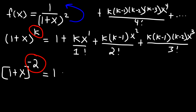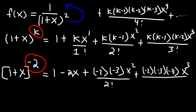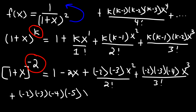We're going to have 1 minus 2x. Then it's negative 2 times (negative 2 minus 1), which is negative 3, times x² divided by 2 factorial. Then it's negative 2, (k-1) is negative 3, and (k-2) is negative 2 minus 2, so negative 4, times x³ over 3 factorial. The next term is negative 2 times negative 3 times negative 4 times (k-3), which is negative 5, times x⁴ divided by 4 factorial.